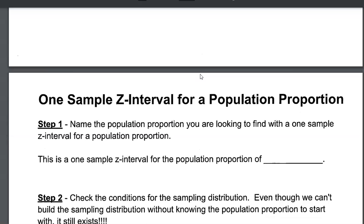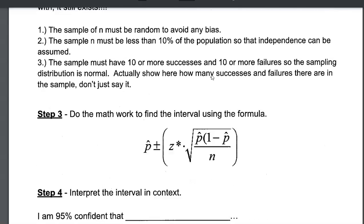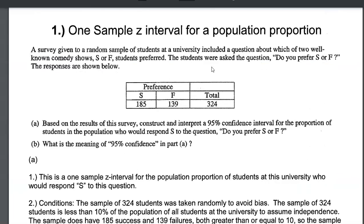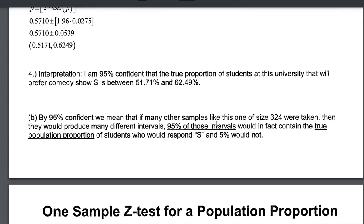What I have for you is directions on how to conduct every one of these different inference procedures. For example, right now you're looking at a one sample Z interval for a population proportion. So not only do I have the directions for how to do it, I then have a full example, an example of that procedure actually being done with all of my work step-by-step being shown beautifully.